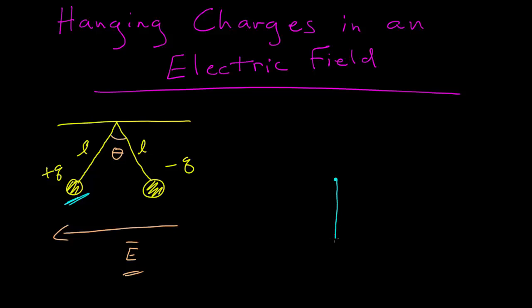So there's the force due to gravity, and that's pointing straight down. And these both have mass M as well as the same but opposite amount of charge. So there's the force due to gravity, and then there's going to be this tension that's coming off at some angle due to the string.